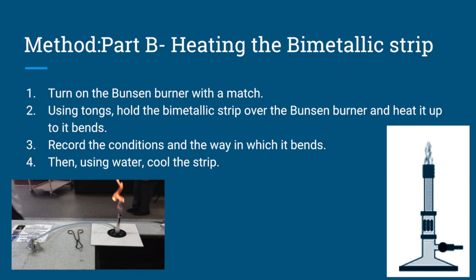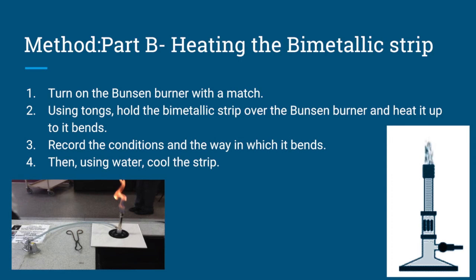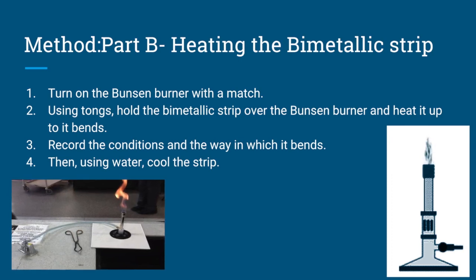Method Part B - Heating the bimetallic strip. Step 1: Turn on the Bunsen burner with a match. Step 2: Using tongs, hold the bimetallic strip over the Bunsen burner and heat it up until it bends. Step 3: Record the conditions and the way in which it bends.